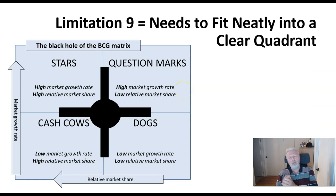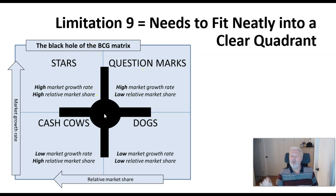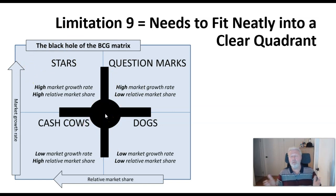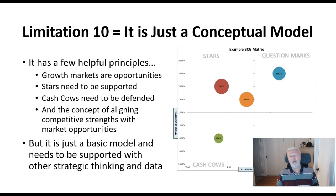Limitation nine: portfolios need to fit clearly into a quadrant. If a business sits right in the middle — what could be called a 'black hole' — it gives no strategic guidance, being a little of each of the four quadrants. Similarly, a business sitting halfway between a cash cow and a star or a question mark and a dog leaves you without clear direction. The BCG matrix requires clear, distinct placement to be useful.